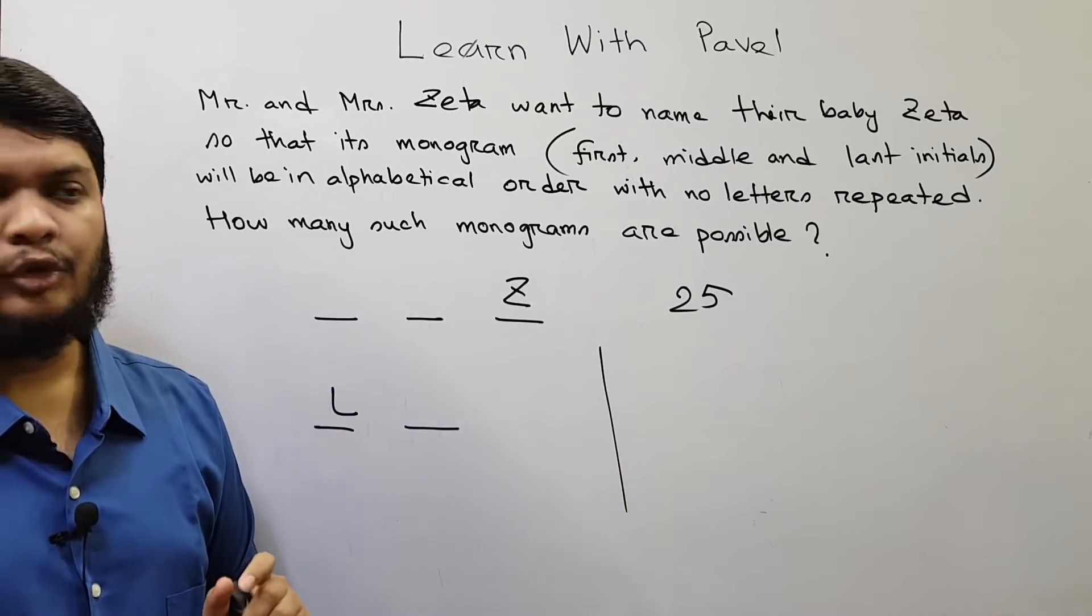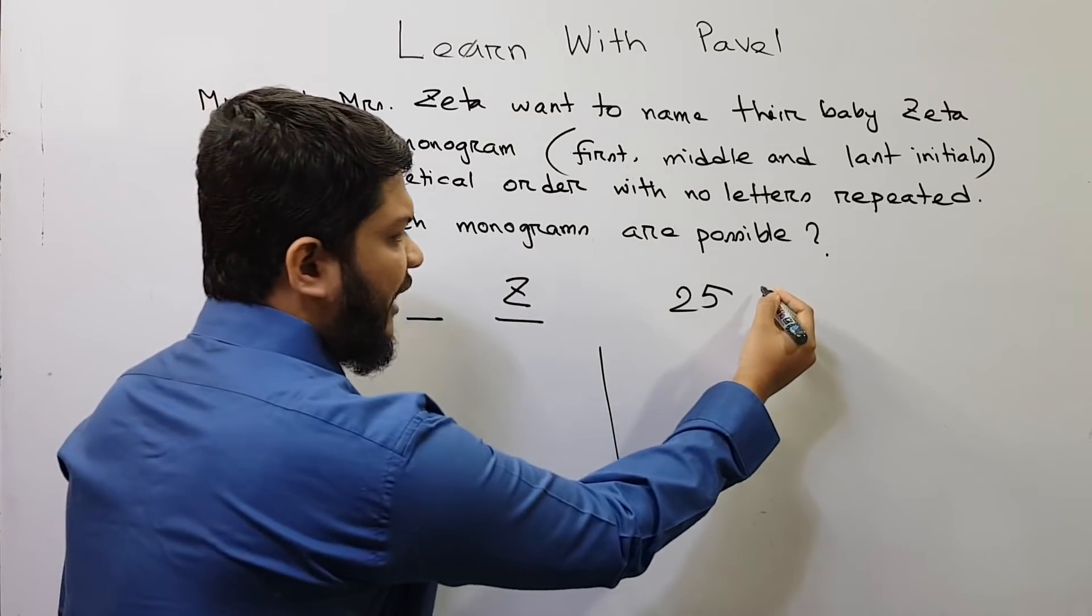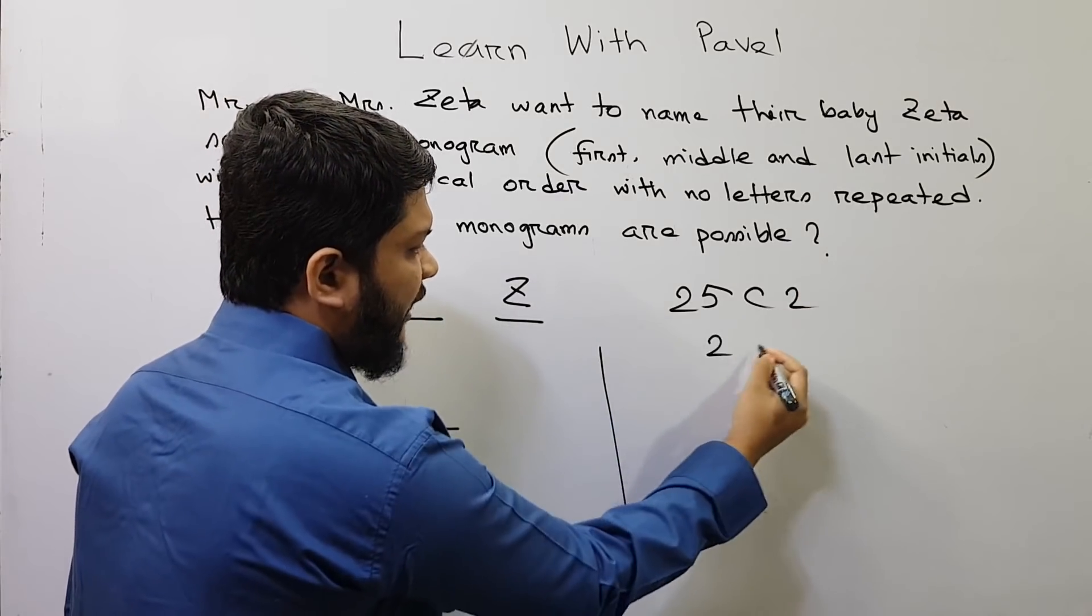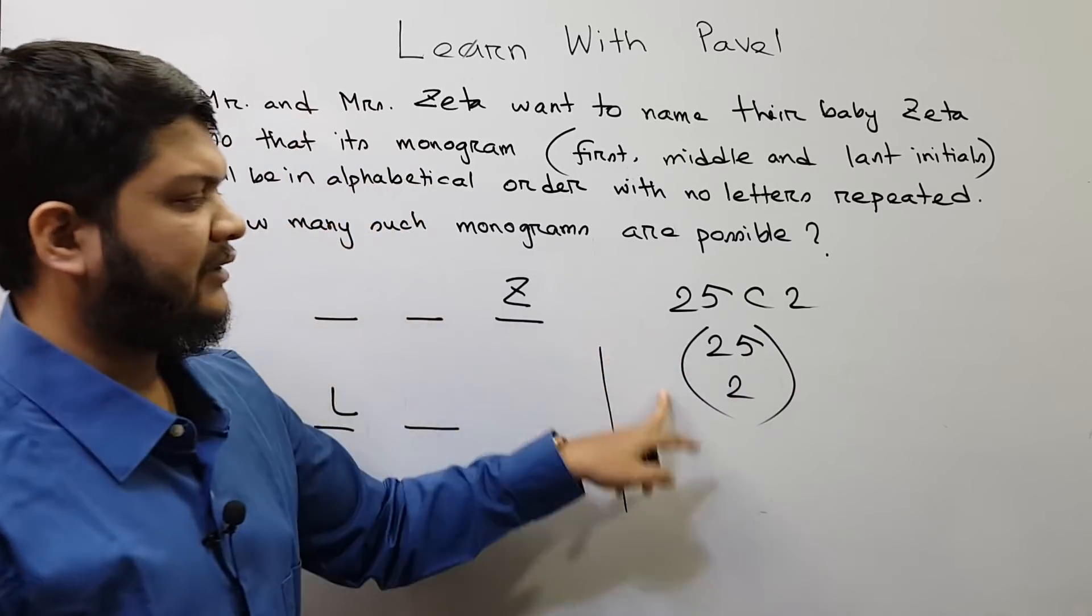So in how many ways can we select two of them? This is called 25C2, or you can write in this way 25C2, the same meaning.